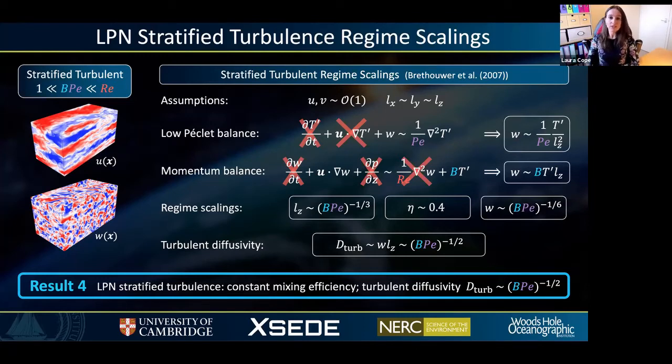This is reassuring and this leads to our final result in which we're able to deduce a scaling for the vertical turbulent diffusivity, which I'll call D-turb, by combining the vertical velocity field W with the vertical eddy length scales Lz to give a scaling of BPe to the minus a half.